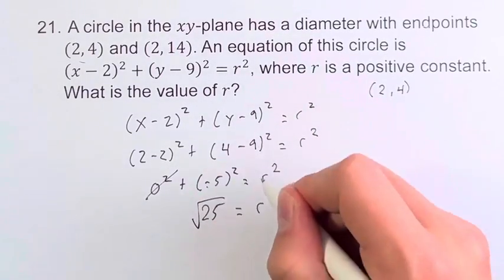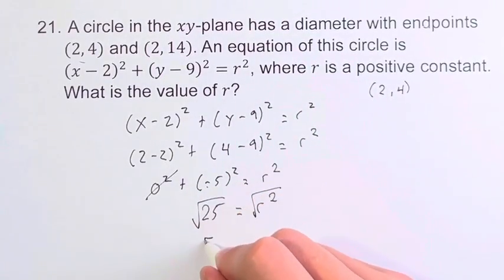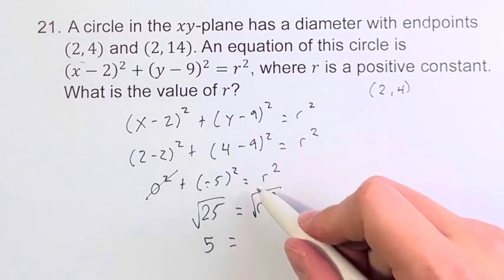Take the square root of both sides. Square root of 25 is just 5 and this is equal to the square root of r².